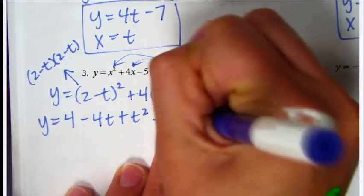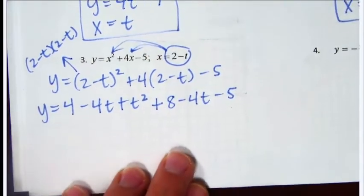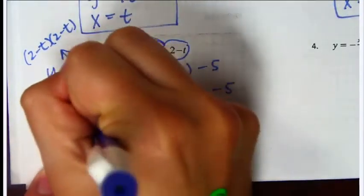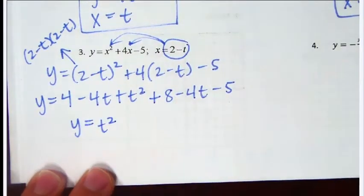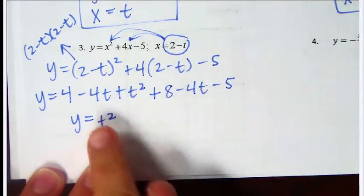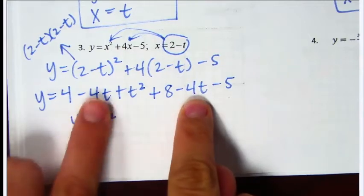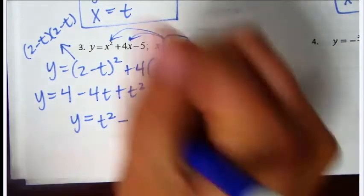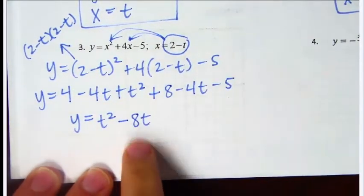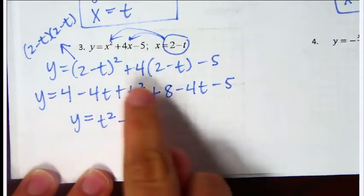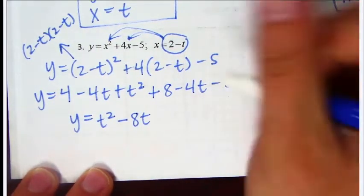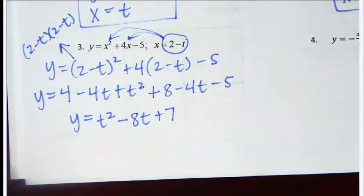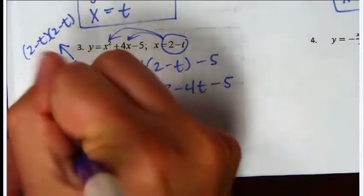Then distribute the 4: 8 minus 4t, and then you still have minus 5. Combine like terms: t squared, then the single t's give us negative 8t, and the constants 4 plus 8 minus 5 give us 7. So our y equation is y equals t squared minus 8t plus 7. Our x equation is x equals 2 minus t.